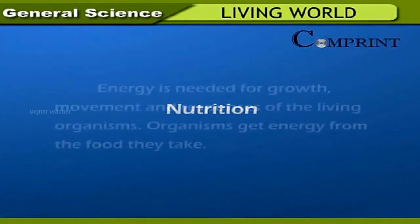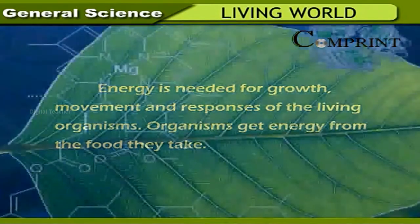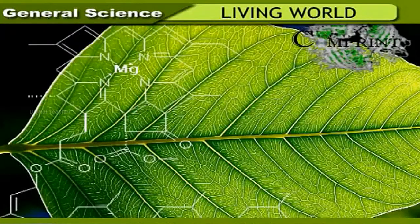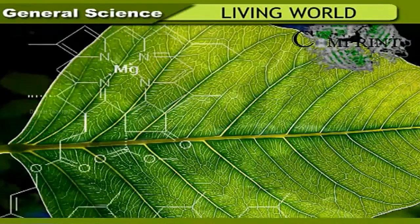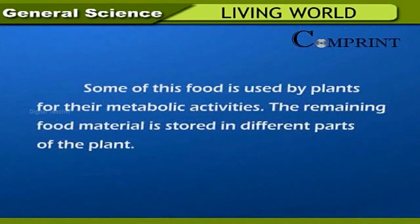Energy is needed for growth, movement, and responses of living organisms. Organisms get energy from the food they take. Green plants prepare their food by the process of photosynthesis. Food is prepared in the chloroplasts, which are present in the green leaves. Water and carbon dioxide are supplied to chloroplasts to prepare food in the presence of sunlight. Some of this food is used by the plants for their metabolic activities, and the remaining food is stored in different parts of the plant.